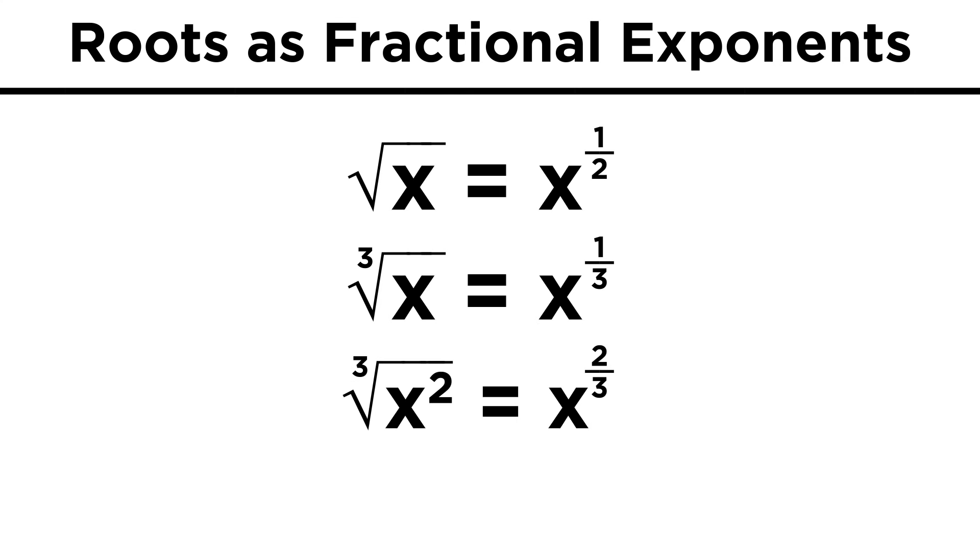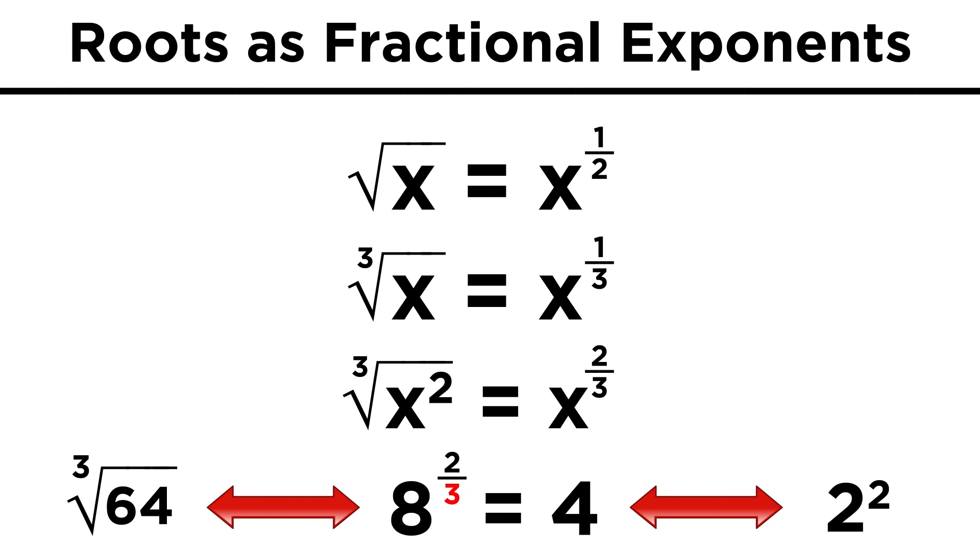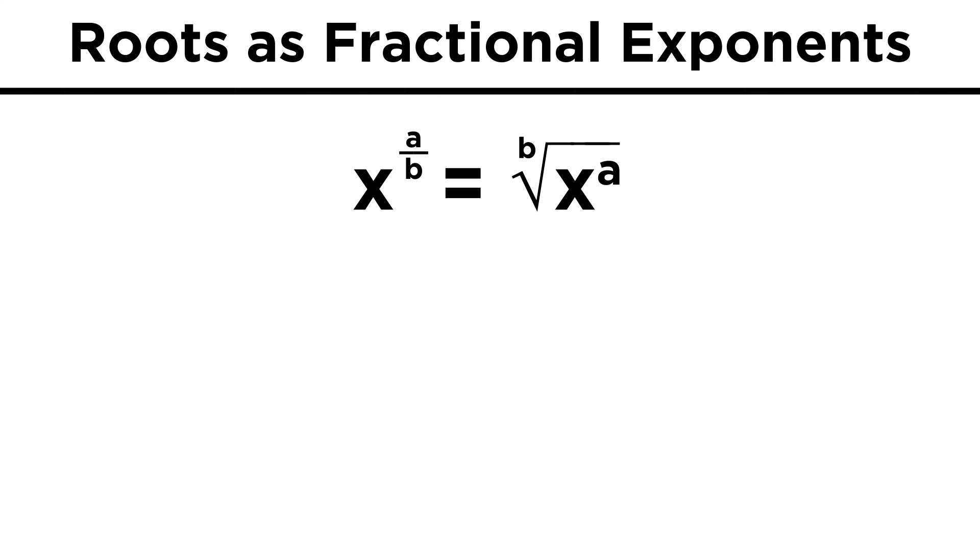Taking the cube root is the same as raising something to the one-third power. We can also combine two different operations into one fraction. Raising something to the two-thirds power means squaring it and taking the cube root, so eight to the two-thirds power equals four, which we can verify by either squaring first and then taking the cube root, or taking the cube root and then squaring. In this way, x to the a over b power simply means to multiply x by itself a times, and then take the b root.